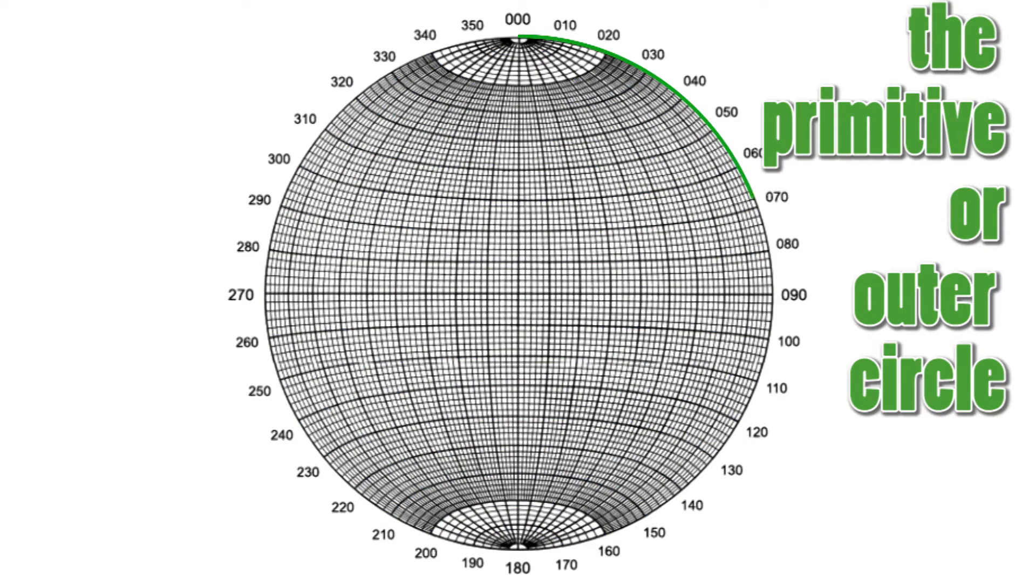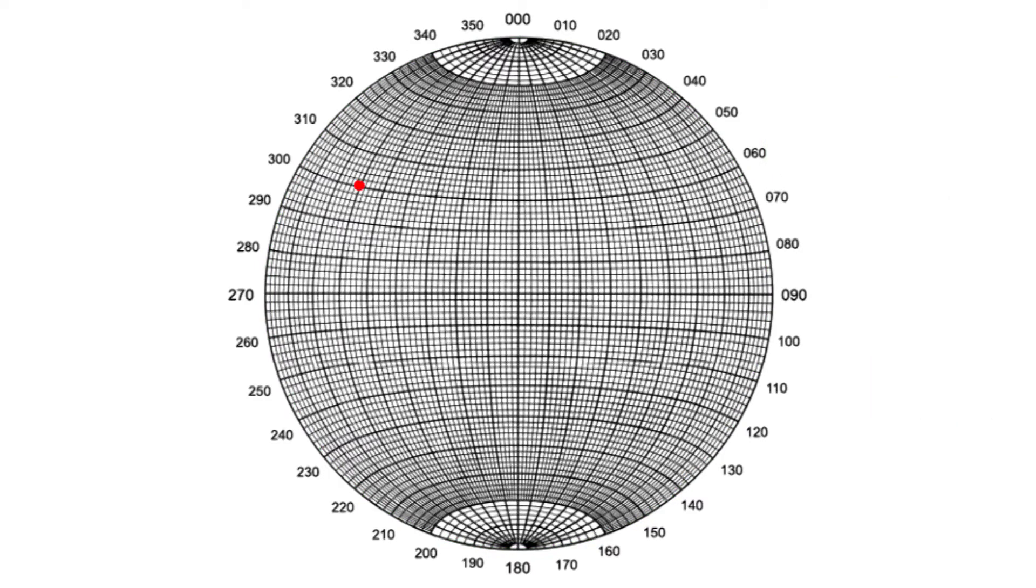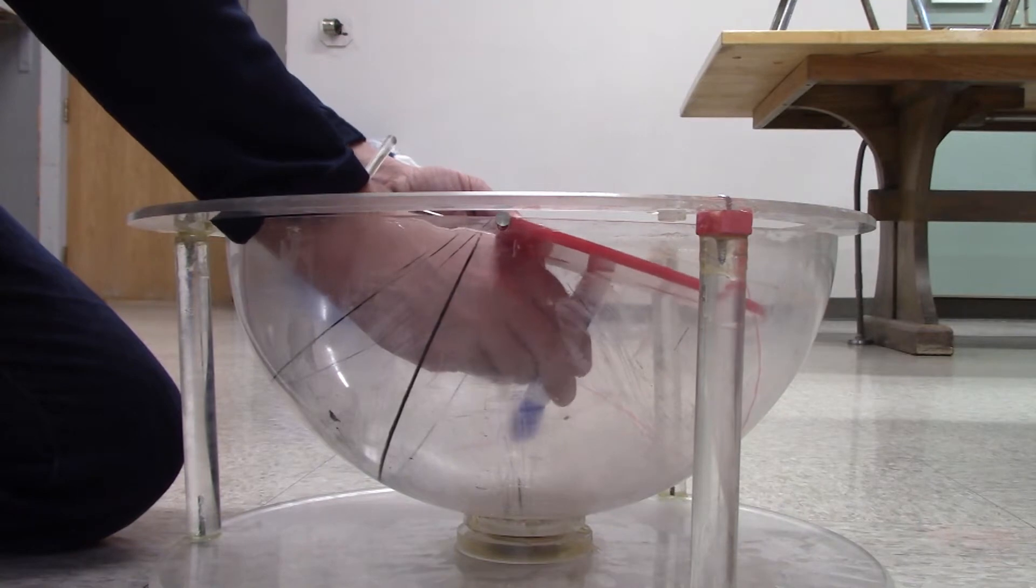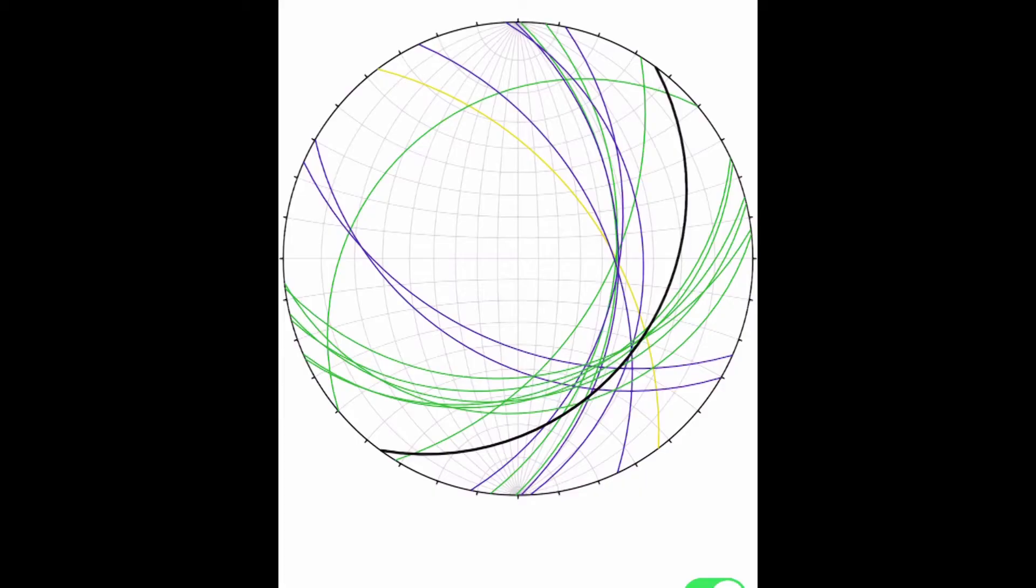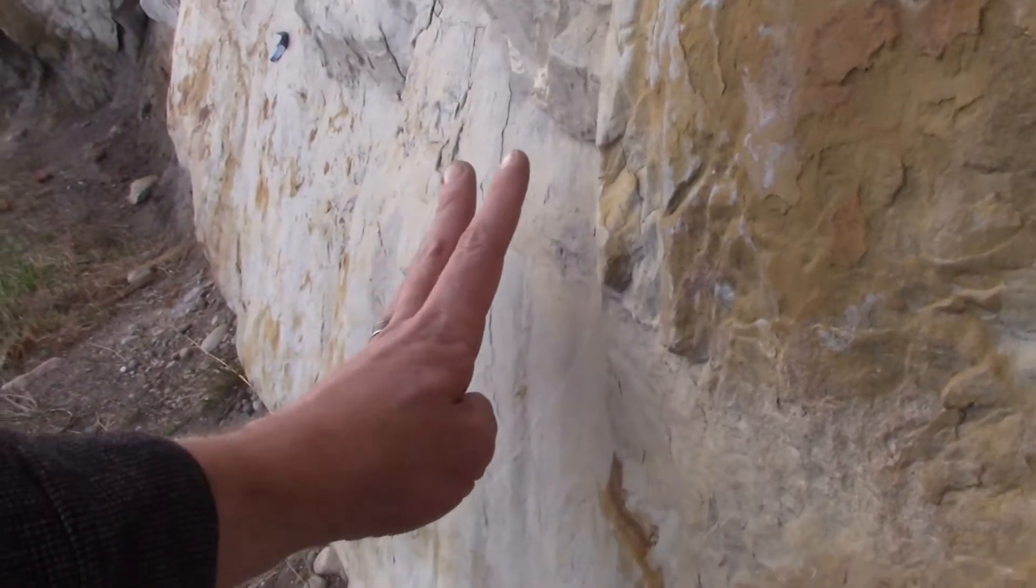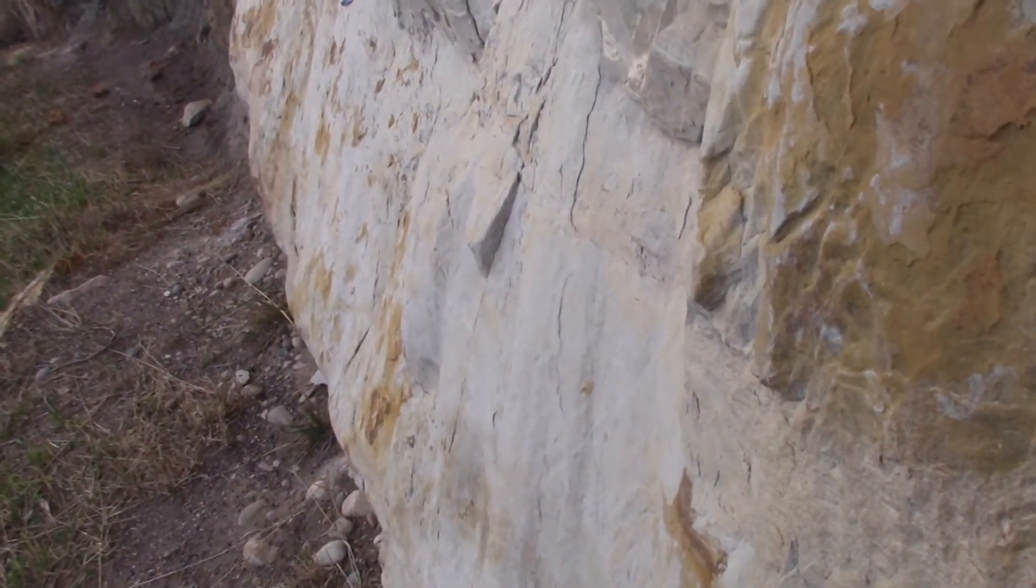We call the outer circle the primitive great circle, or just the outer circle. We saw that linear data will plot as a point. We made linear poles coming off planes, which plot as points. But we should practice how to plot a linear datum, not just get the pole from a plane.